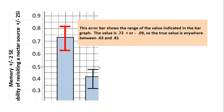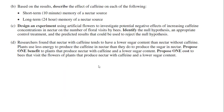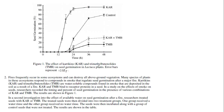To highlight one specific error bar: the value of 0.72 plus or minus 0.09 means the true value of that mean can lie anywhere between 0.63 and 0.81. That's the purpose of the error bars.